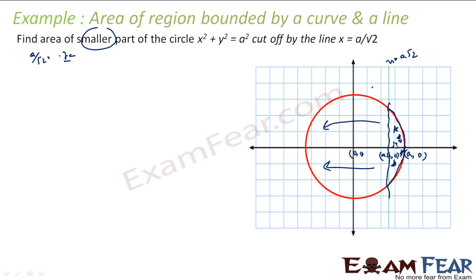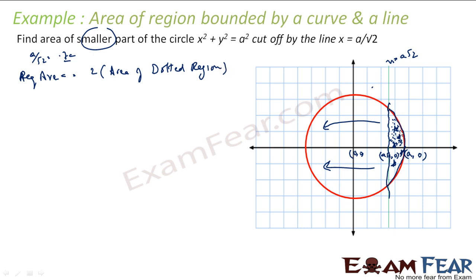So the required area is nothing but 2 times the area of the dotted region (the upper half of the smaller part). If I find the area of the dotted region and multiply by 2, I get the full star-region area, which is what we are looking for.